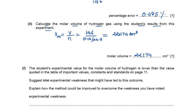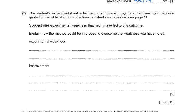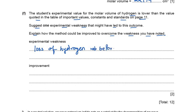The sub-question states that the student's experimental value for molar volume of hydrogen is lower than the value quoted in the table of important values and constants. Suggest one experimental weakness that might have led to this outcome. The likely reason is loss of hydrogen gas before the conical flask is sealed — we need to stopper the flask immediately after magnesium is added.